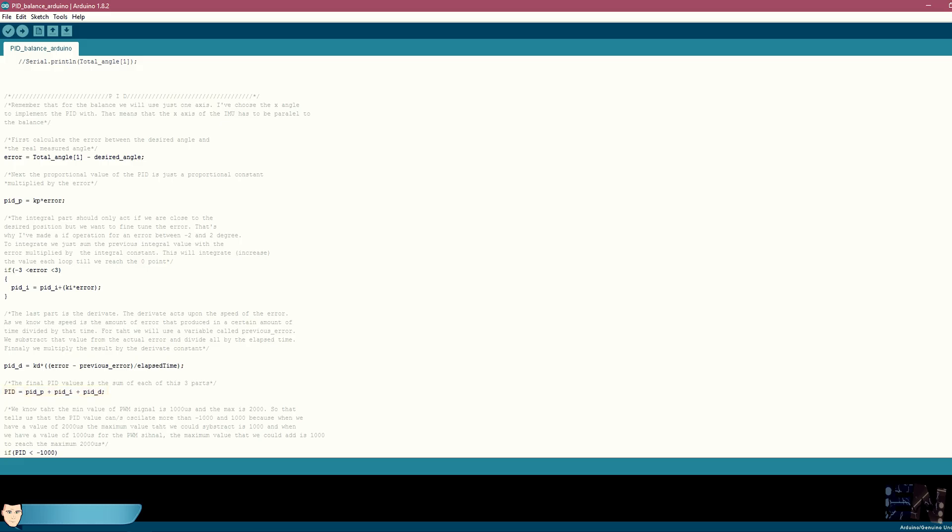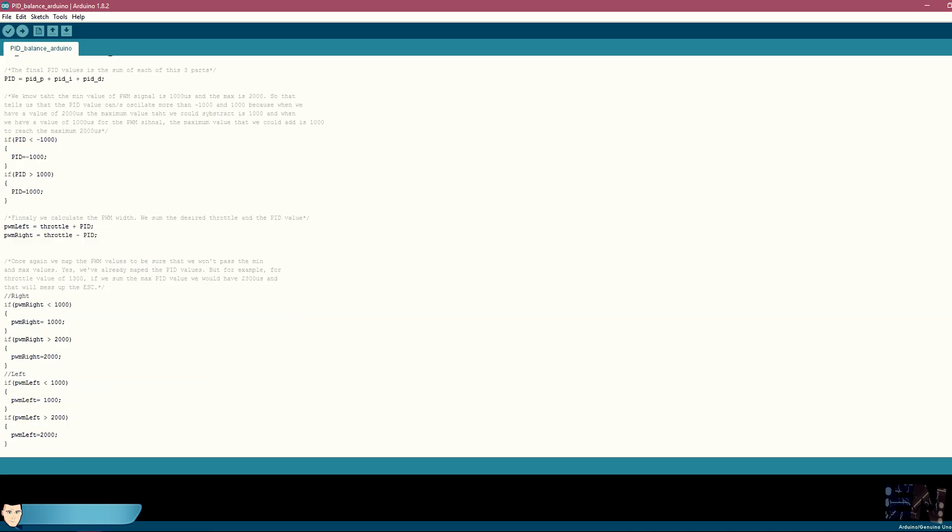Now, we have to give a maximum and minimum range for the PID since the motors could only accept values between 1000 and 2000 microseconds. We apply that range here.